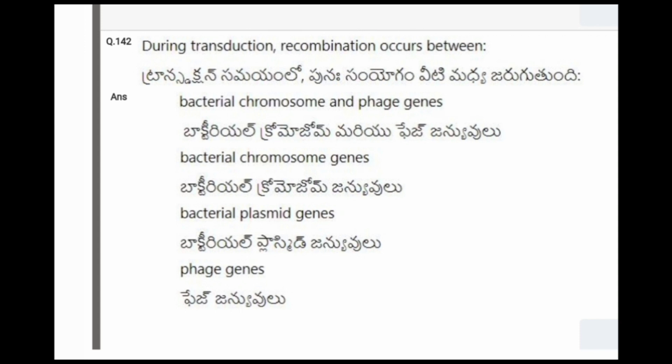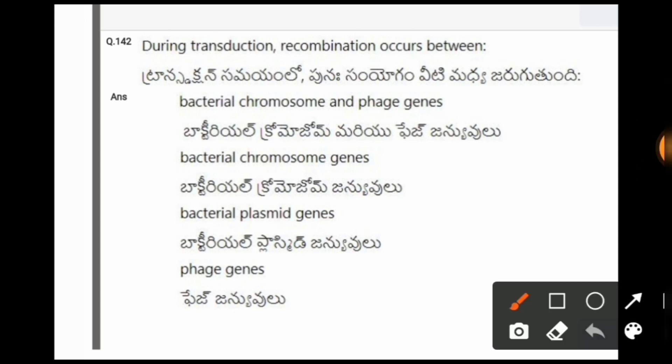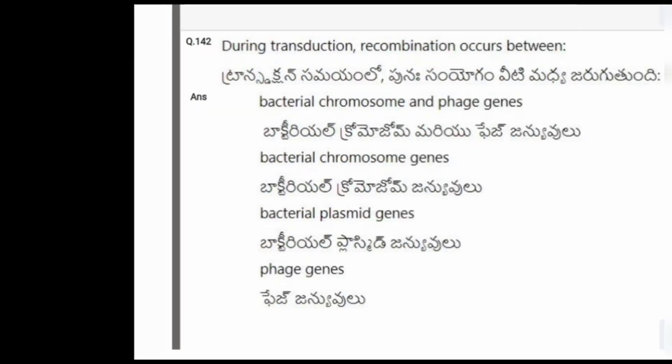Next question: During transduction, recombination occurs between? The options are bacterial chromosome and phage genes, bacterial chromosome genes, bacterial plasmid genes, phage genes. The correct option is the second one, that is bacterial chromosome genes.